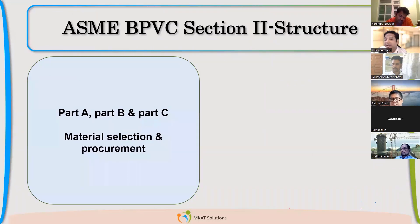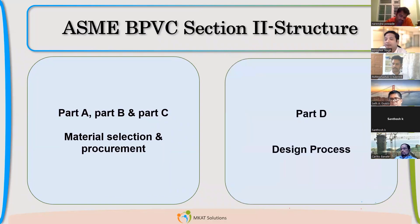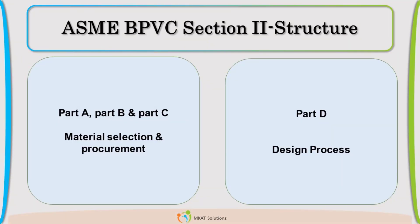So Parts A, B, and C are mainly related to procurement, while Part D is related to the design process because it contains the material properties.